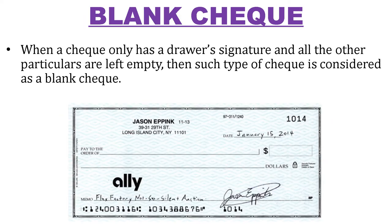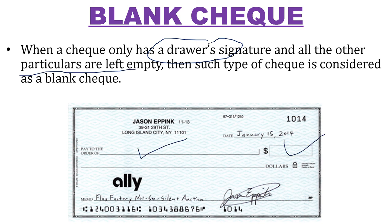Then comes the blank check. You may have seen that a blank check has only a signature on it. If a drawer signs the check and leaves everything else blank — the date, the amount, all other particulars — such a check is known as a blank check. When a check only has the drawer's signature and all the remaining fields are left empty, it is simply called a blank check.